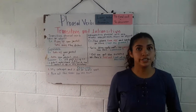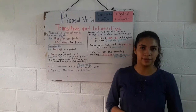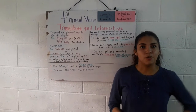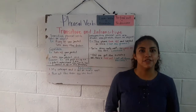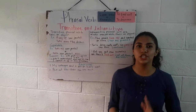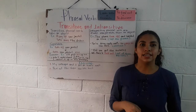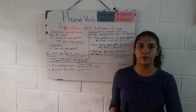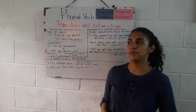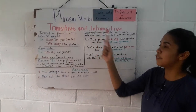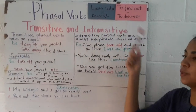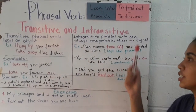But first, we have to know what is a phrasal verb. A phrasal verb is a verb that consists of two or three words. These words usually are verb plus an adverb or pronoun. Here we have an example. The first example is 'look into', which means research.